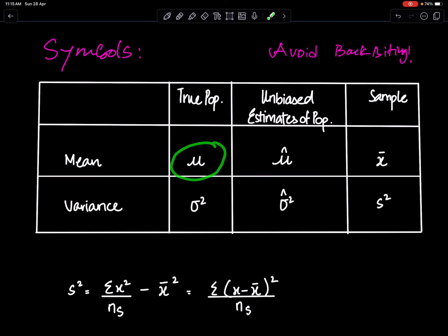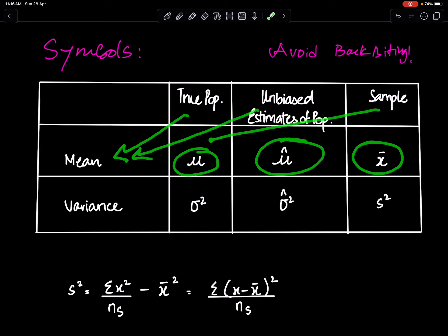Mu means true population mean, whereas mu cap means the unbiased estimate of population mean, and x bar means sample mean.